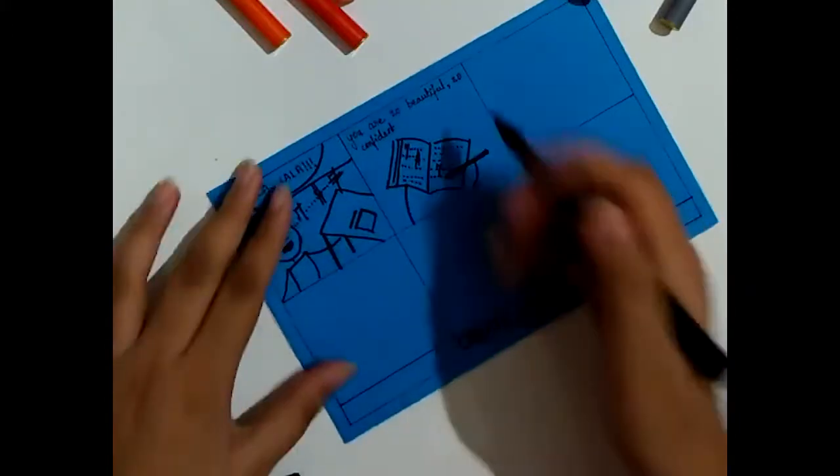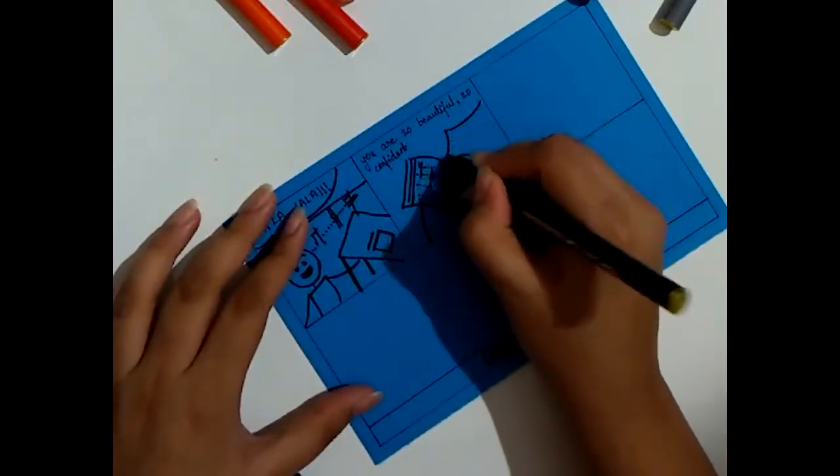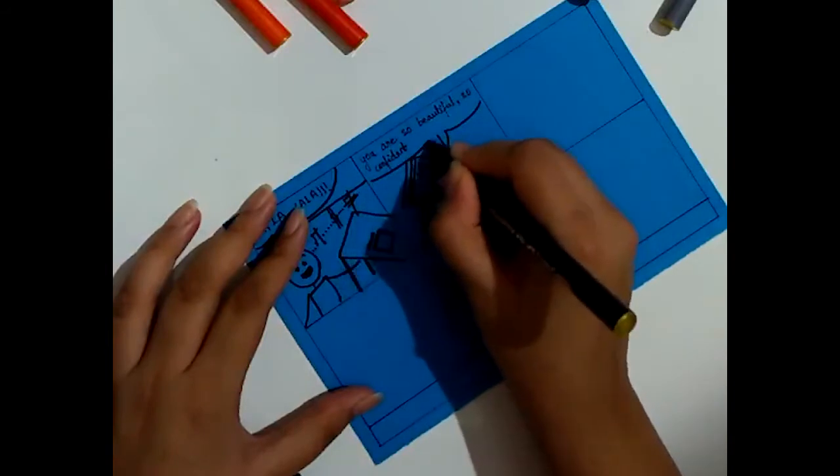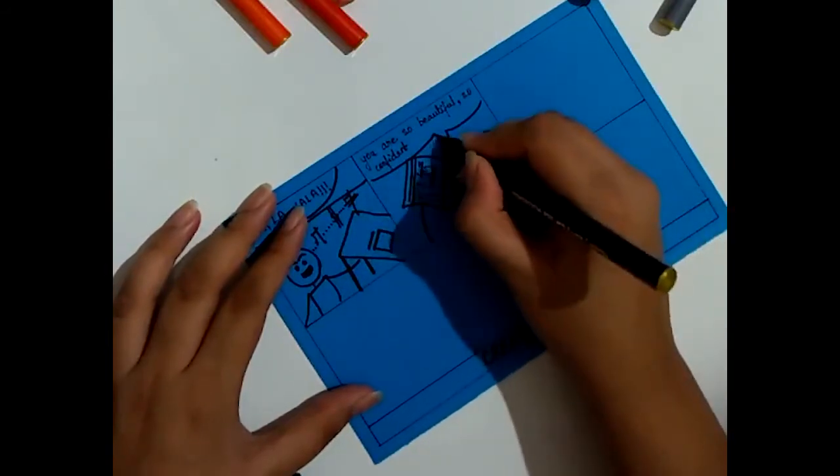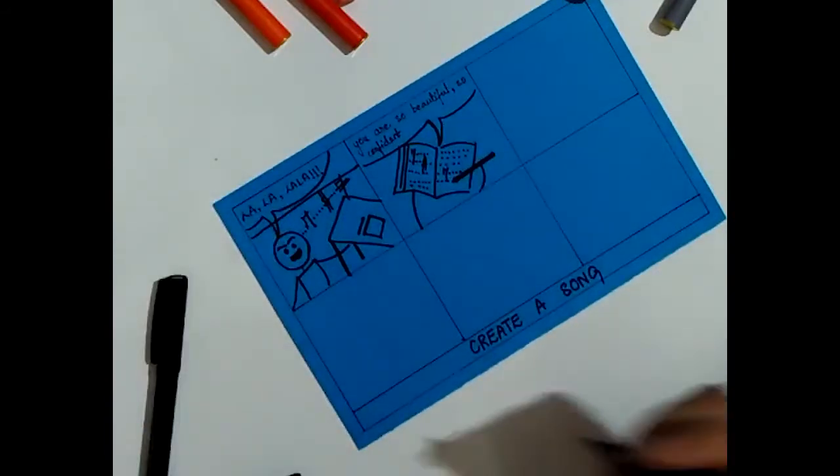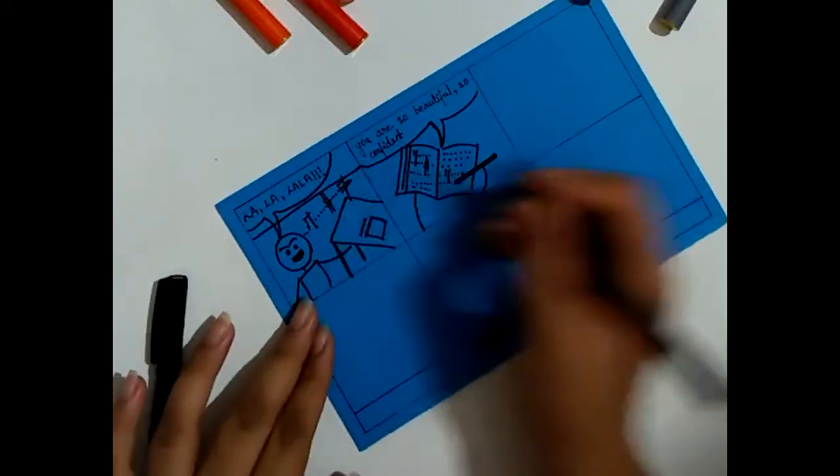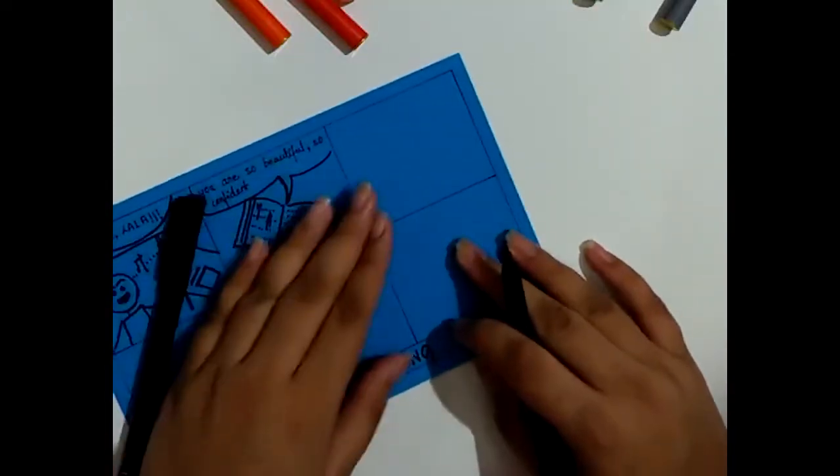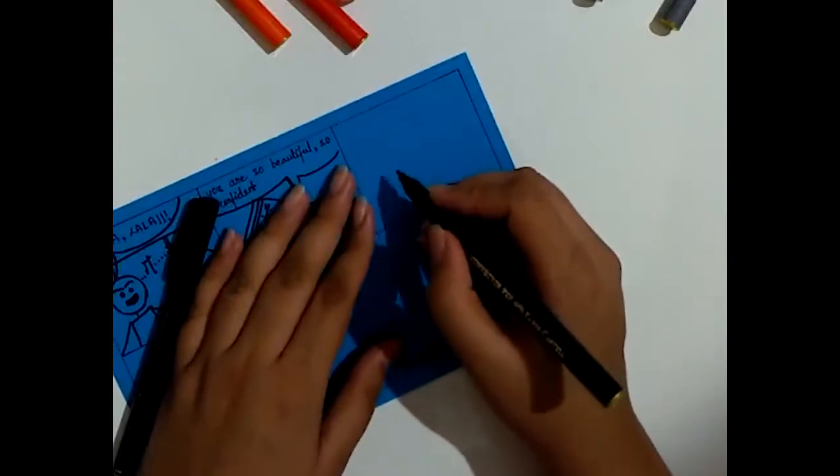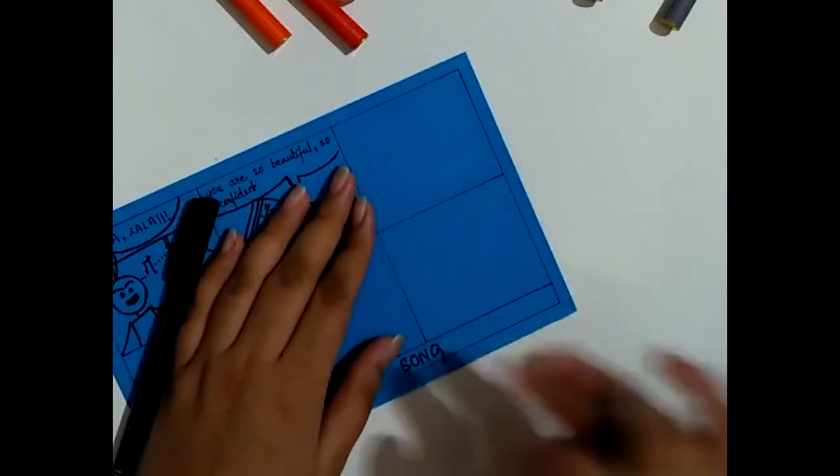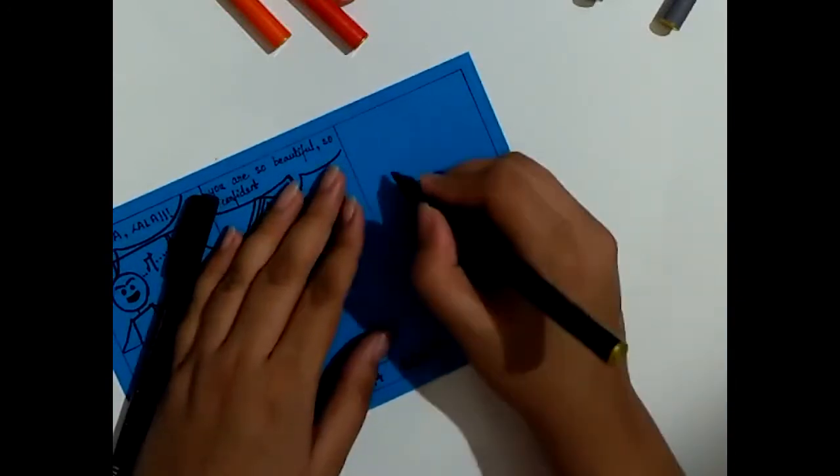Now we just add a bubble that is depicting the words from the book. Okay, so now we'll go to the next scene where we are showing that the person is sitting on the table and saying that he has finally finished the song.